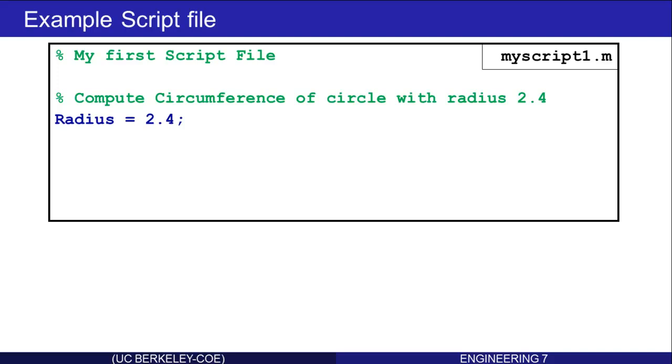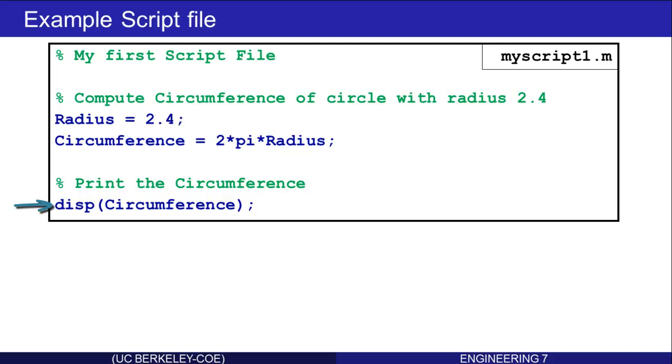Here's a MATLAB assignment assigning the number 2.4 to the variable radius. The circumference is assigned 2 times pi times the radius. Another comment, print the circumference, and then the MATLAB command, disp circumference. That's the script file. Let's look at it in a little more detail.